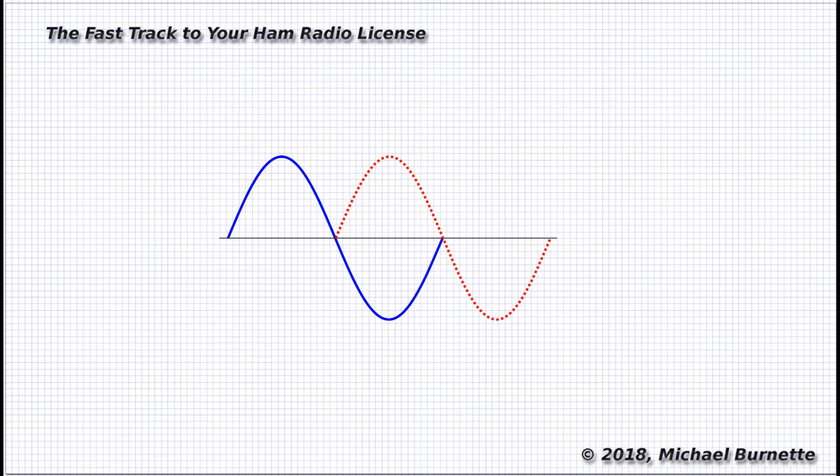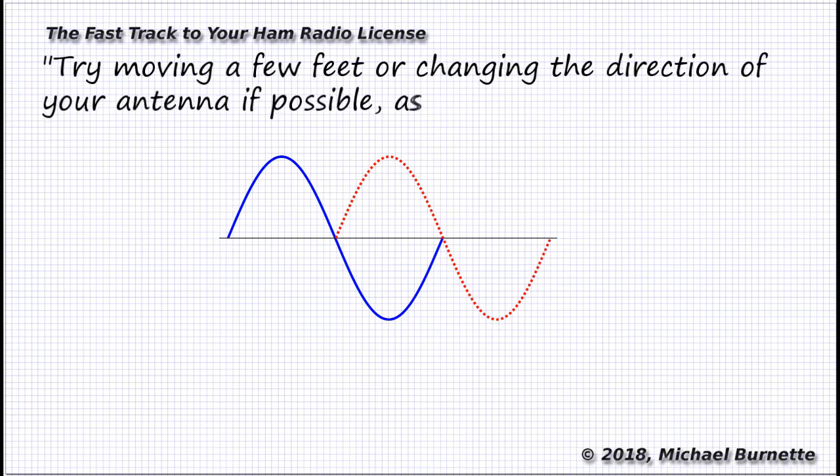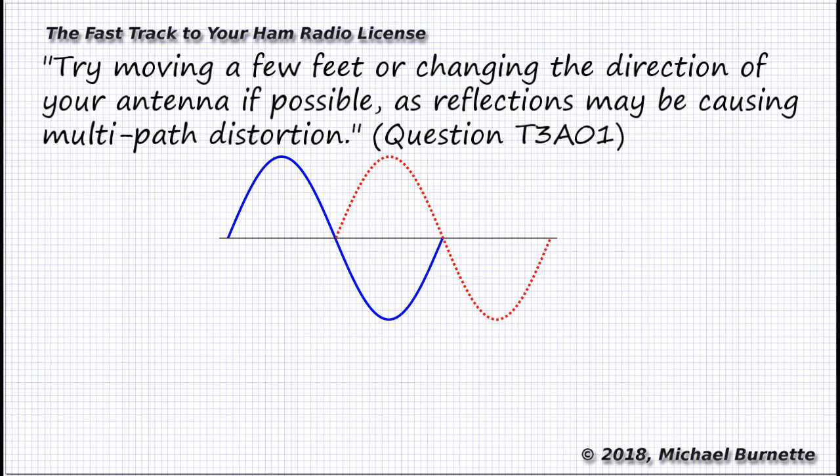The cure, if you're on a handheld radio, is just move. It often doesn't take much. After all, handhelds are mostly operating on wavelengths of 2 meters or 70 centimeters. And that means as little as 35 centimeters, about a foot of movement, might put you in a better spot.